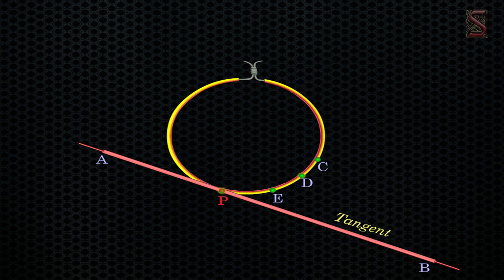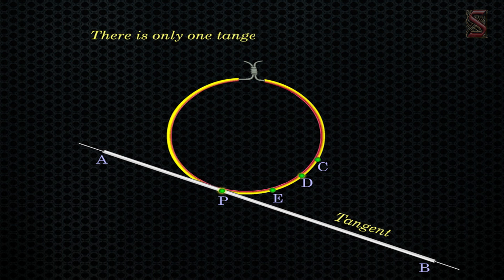That line becomes the tangent to the circle. This shows that the tangent exists at the point P of the circle. On rotating further, we can observe that in all other positions of AB it will intersect the circle at P. So we can observe that there is only one tangent at a point of the circle.